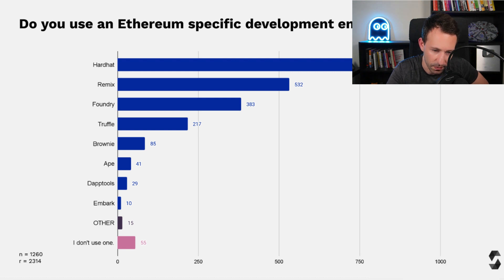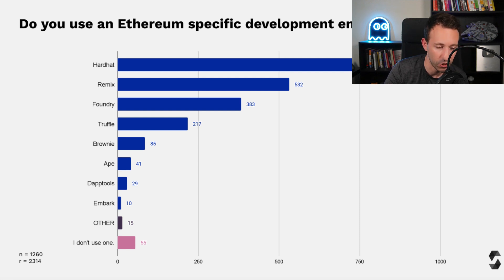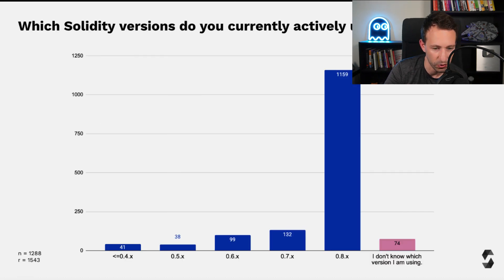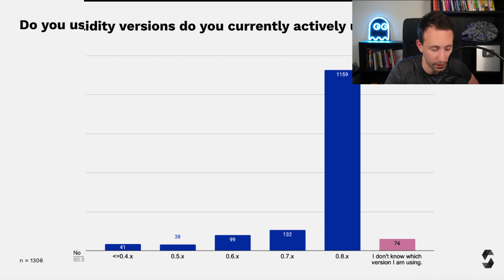Do you use an Ethereum-specific development environment? The top framework is Hardhat, then Remix, then Foundry. In one year, Foundry made a big jump in the rankings, while Truffle saw the opposite — a big plunge. When asked which Solidity version to use, most people use the latest version, and there is absolutely no reason to use an older version unless you're trying to extend an older smart contract.